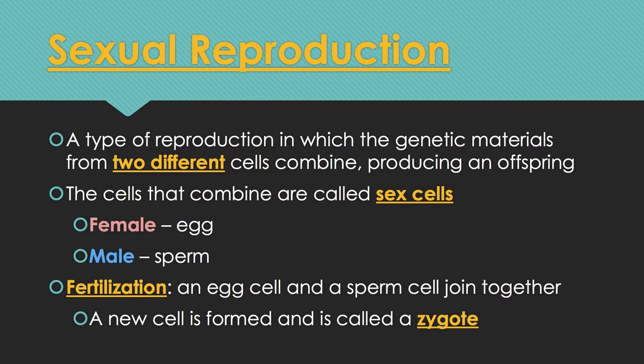Fertilization is when an egg cell and a sperm cell join together. A new cell is formed and is called a zygote. When the egg cell and sperm cell come together, those two cells become a single fertilized cell, and that single fertilized cell is called a zygote.